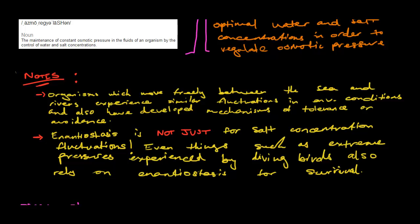Here are some notes that might help. Organisms which move freely between the sea and rivers experience similar fluctuations in environmental conditions and have also developed mechanisms of tolerance or avoidance. Also important to remember: enantiostasis is not just for salt concentration fluctuations — it's also for things such as extreme pressures experienced by diving birds. It is needed for the survival of the organism, not just for salt concentrations.